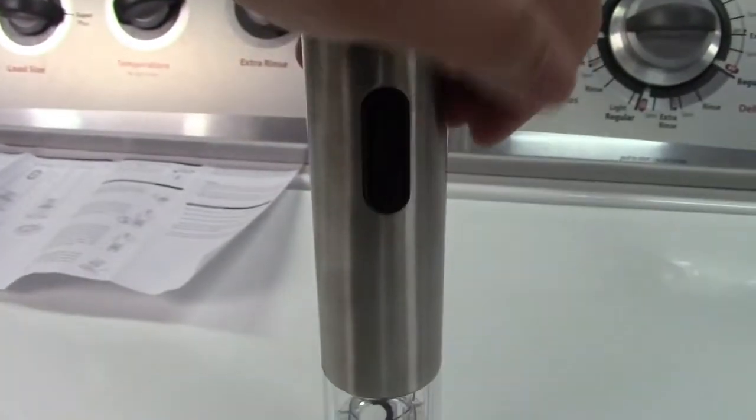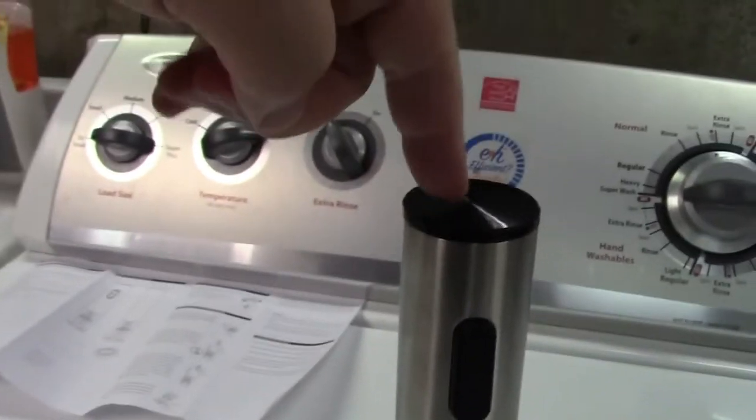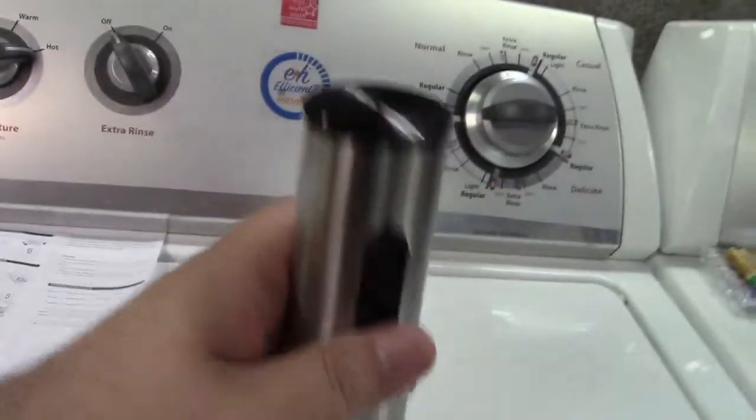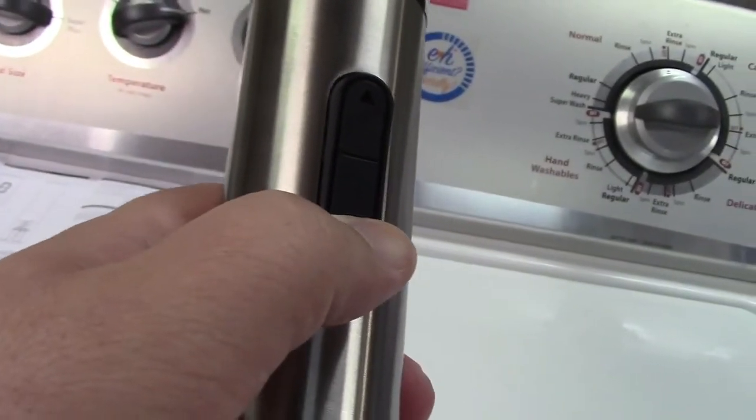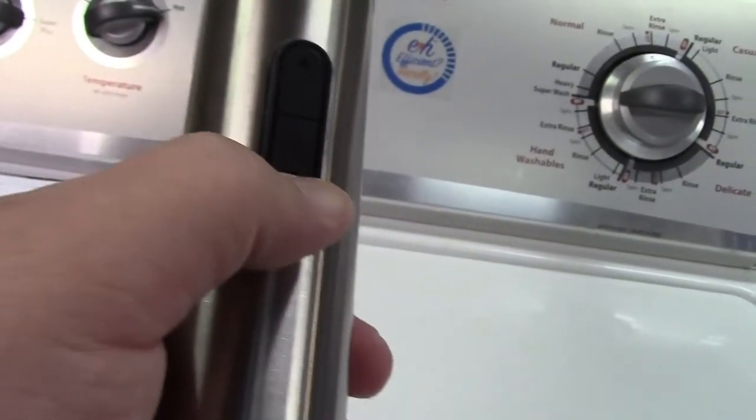Now this runs on four AA batteries which go in the top here. I'll show you that in a moment. To operate it, it's very simple. Press the down button to pull the cork out of the bottle.